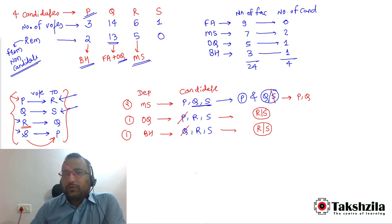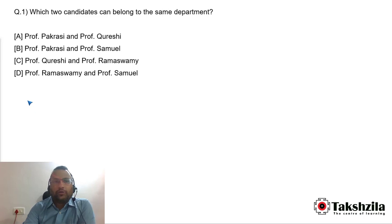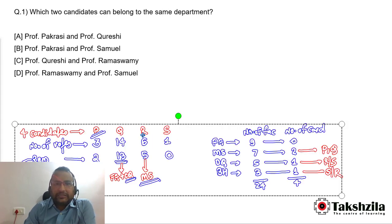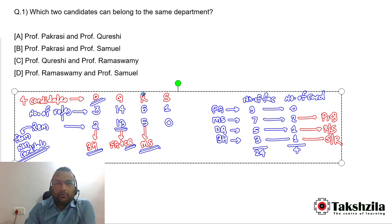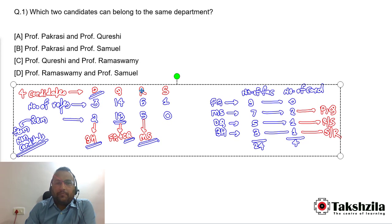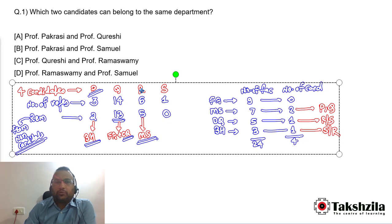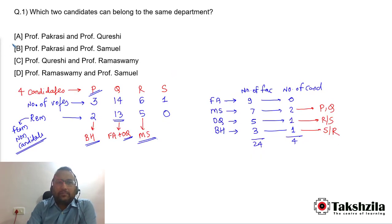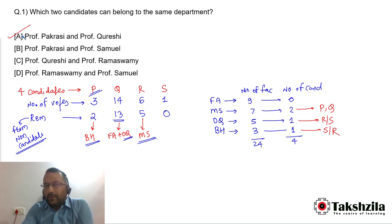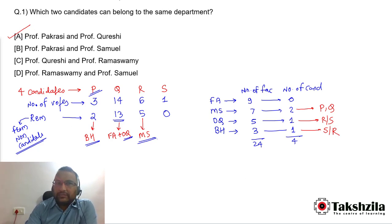Question 1: Which two candidates belong to the same department? From our analysis, candidates P and Q both belong to department M&S. So the answer to question 1 is option A: P and Q.